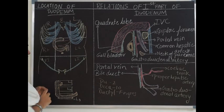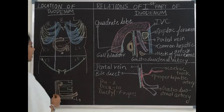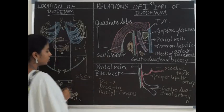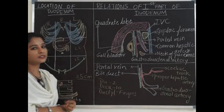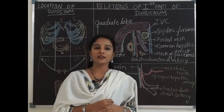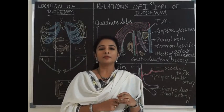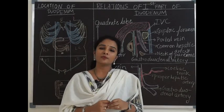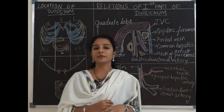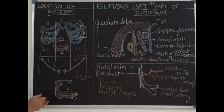The duodenum is located mainly in the umbilical region, present above the level of the umbilicus, partially extending into the right lumbar and epigastric regions. Its vertebral relation is between L1 to L3. The total length of the duodenum is 25 centimeters — 12 fingers breadth — and it is the first part of the small intestine, a continuation of the pyloric part of the stomach. The total length of the small intestine is 6 meters, and only the first 25 centimeters is formed by the duodenum.